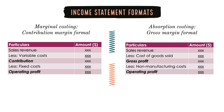Let us start with the marginal costing income statement format. As with any other income statement, we will start with sales revenue, which is the top line — the first line of any income statement. So in marginal costing, we start from sales revenue and deduct all variable costs. Importantly, this includes both manufacturing and non-manufacturing variable costs. We deduct all variable costs to arrive at something called contribution.